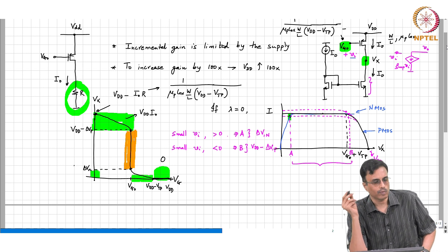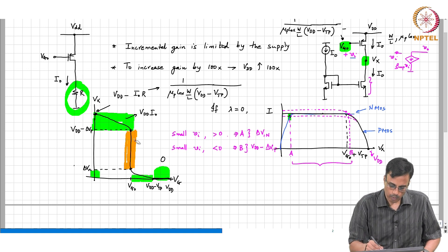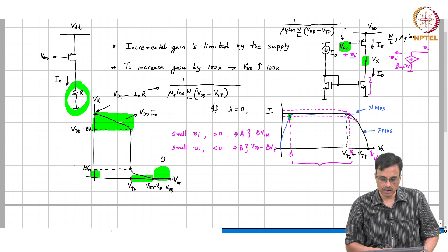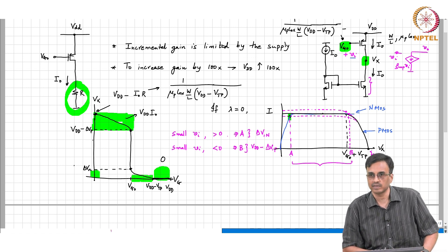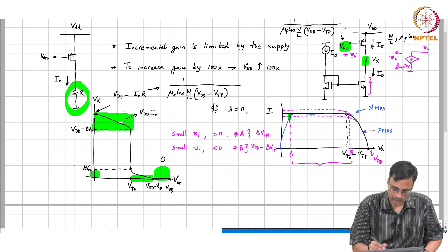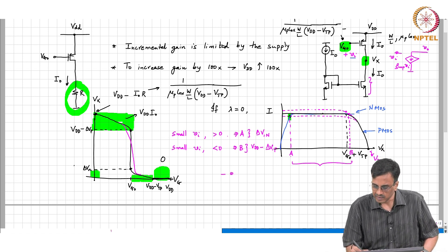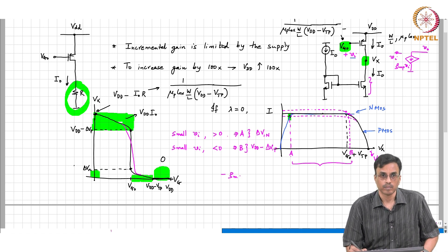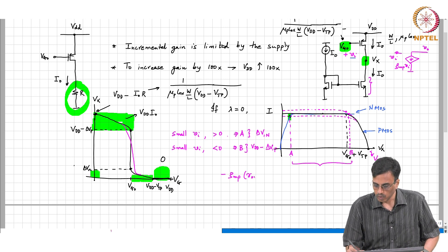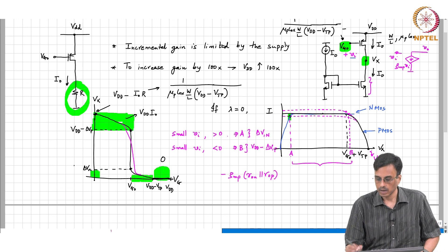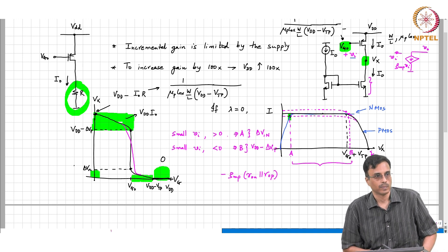With that, the active load discussion is complete. In practice, of course, the output resistance of the transistors will not be infinite. The slope instead of being infinite will be finite. The incremental gain will be minus gmp times (ron_PMOS parallel ron_NMOS).